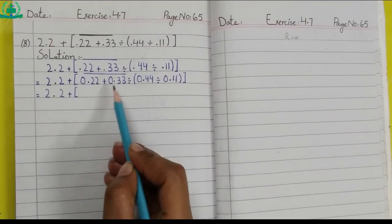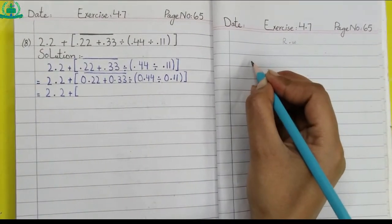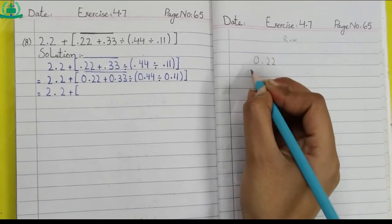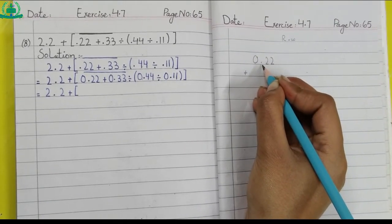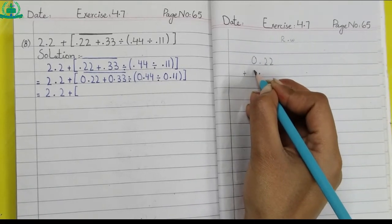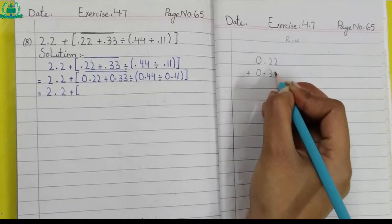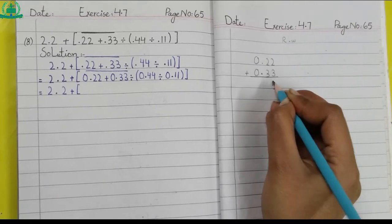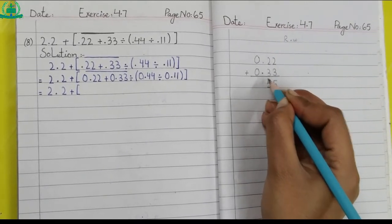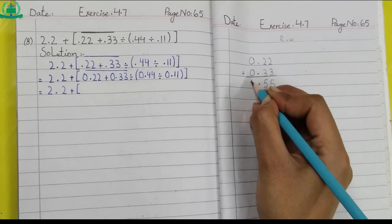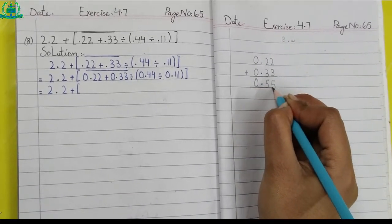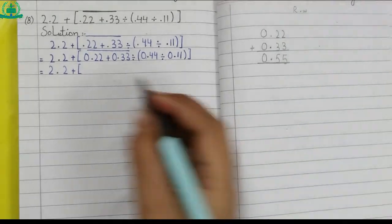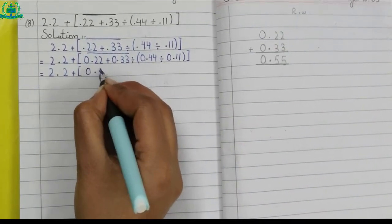0.33 divide — first we solve the bar value. Rough work: 0.22 plus. When we do addition and subtraction we make sure that we write decimal under the decimal. 0.33 — two plus three five, two plus three five. We write decimal under the decimal, zero plus zero zero. 0.22 plus 0.33 makes 0.55, so we write 0.55.